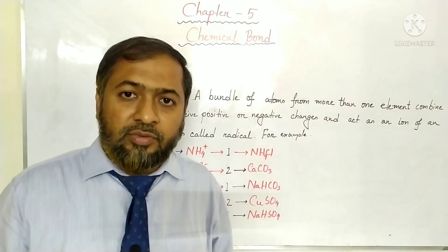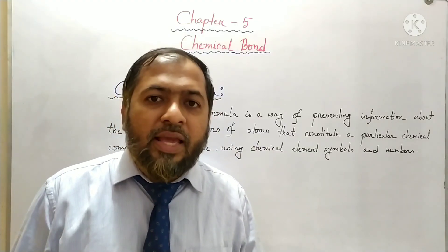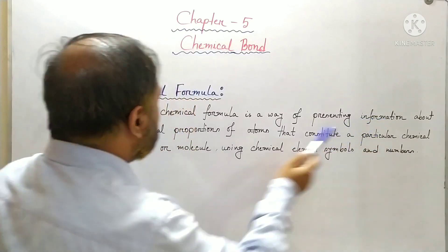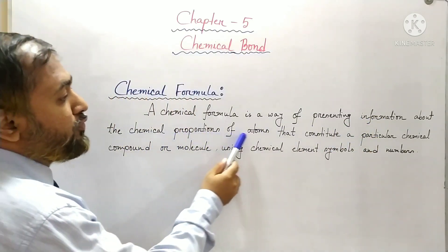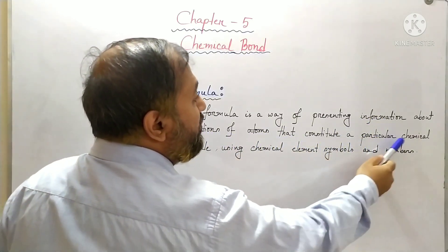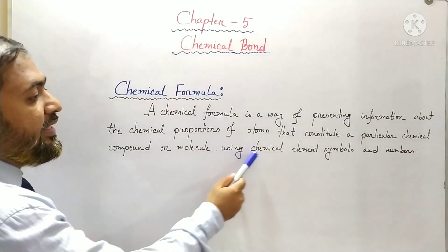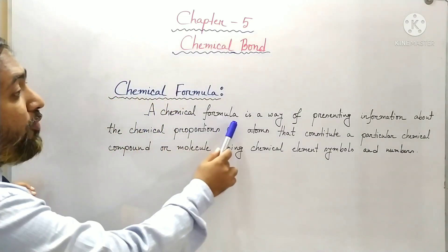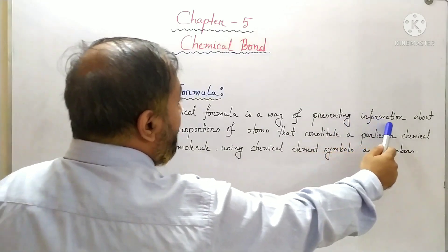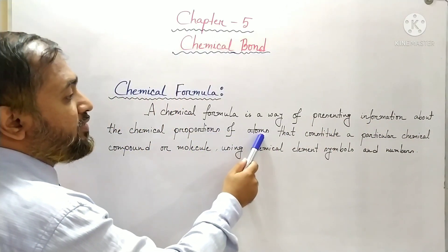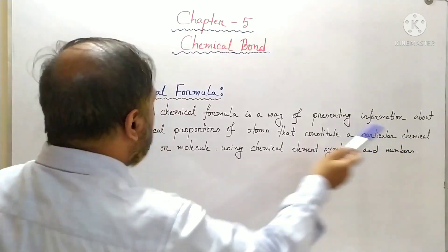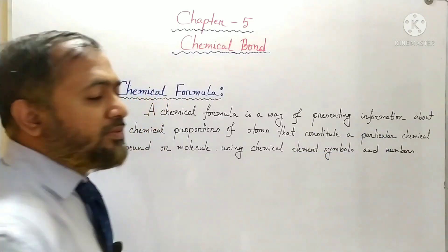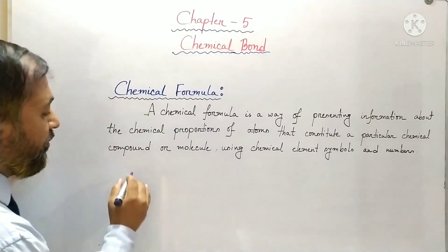So this is all about radicals. Now students, come to the chemical formula. What is a chemical formula? A chemical formula is a way of presenting information about the chemical proportions of atoms that constitute a particular chemical compound or molecule, using chemical element symbols and numbers.